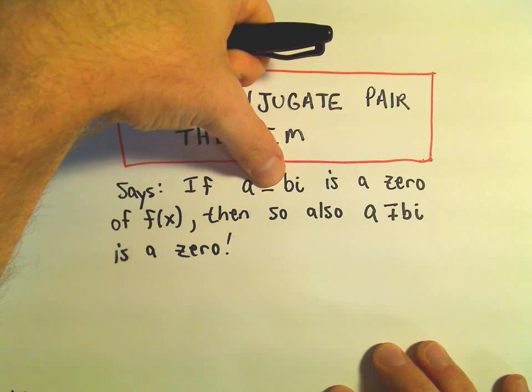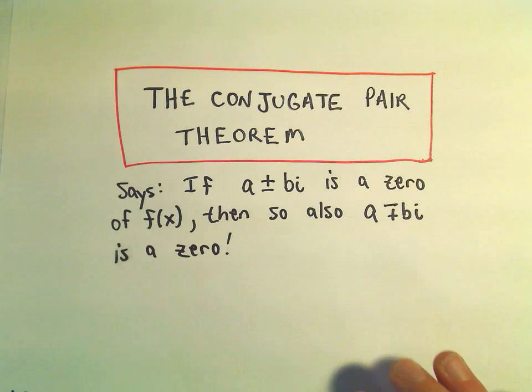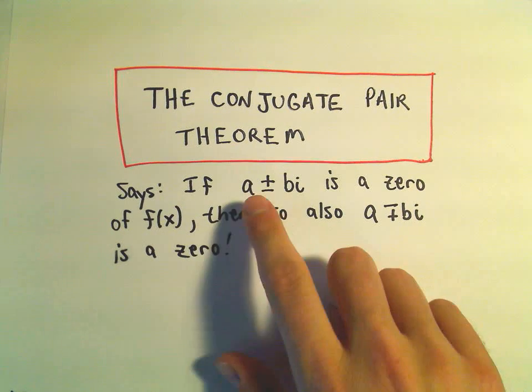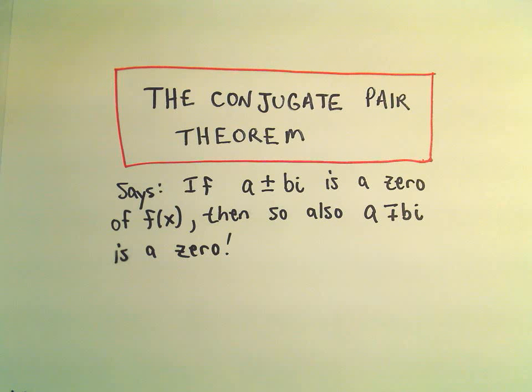Conversely, if a minus bi is a zero, then a plus bi is a zero. So it's this idea that complex numbers, the zeros appear in pairs.